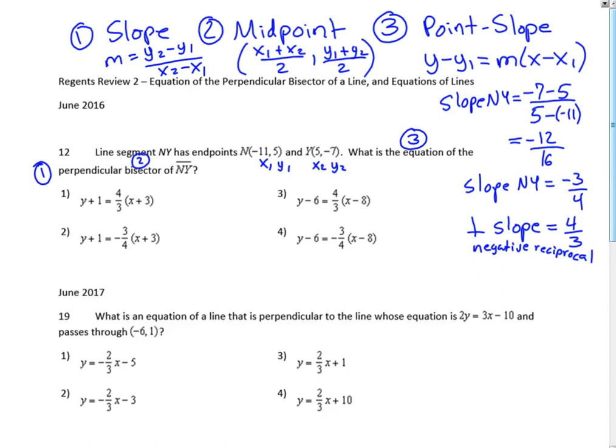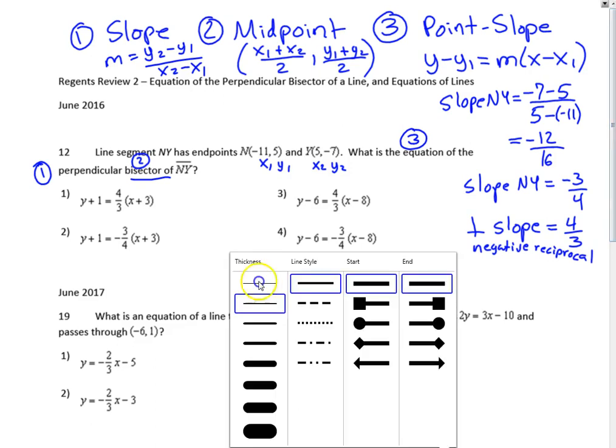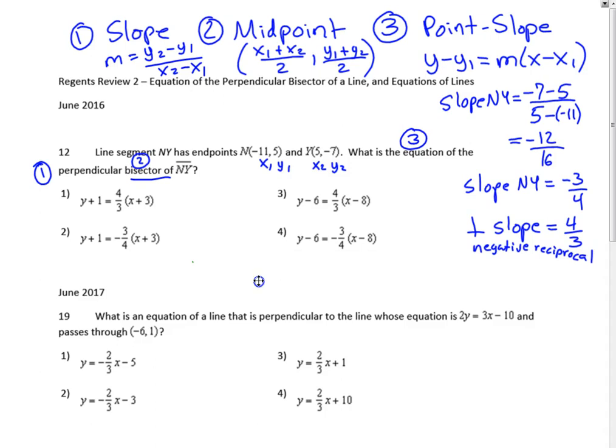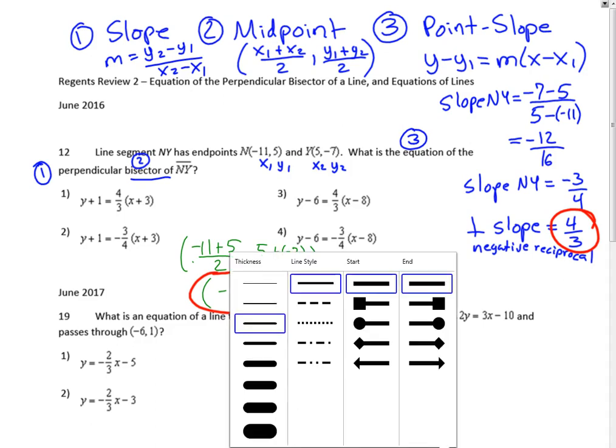Step two is the midpoint. A bisector always goes through the midpoint. (-11 + 5)/2, (5 + (-7))/2 gives us -6/2 = -3, and -2/2 = -1. So the midpoint is (-3, -1). Now we have a slope and a point. This will be our new (x1, y1) for the point-slope formula.